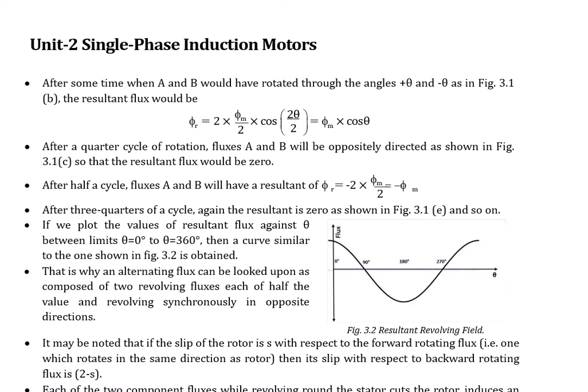After some time, when fluxes A and B have rotated through angles +theta and -theta, the resultant flux phi_r equals 2 × (phi_m/2) × cos(theta), giving phi_m × cos(theta). After a quarter cycle rotation, fluxes A and B are oppositely directed, so the resultant flux is zero as they cancel each other. After another half cycle, the resultant phi_r equals minus 2 × (phi_m/2), giving minus phi_m. So this flux value is not constant — unlike three-phase induction motors which have a constant magnitude flux.